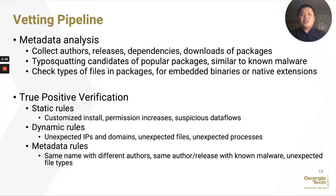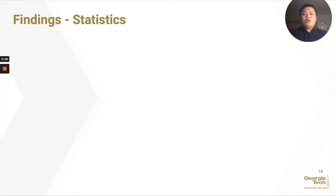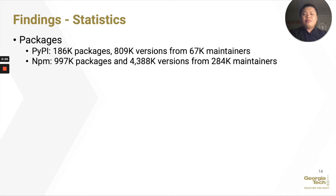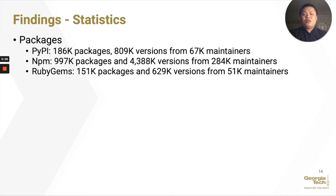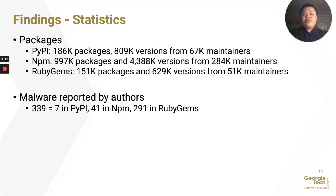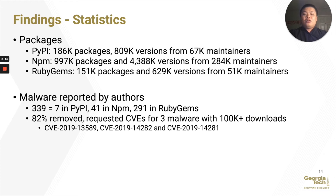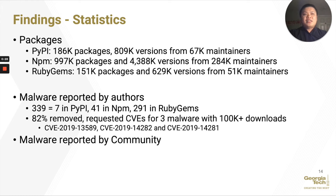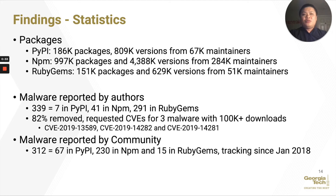Please refer to our paper for a detailed list of the heuristic rules. Using the vetting pipeline, we analyzed packages from PyPI, NPM, and RubyGems, which sums to over a million packages. We identified 339 malware in total, out of which 82% have been removed by registry maintainers, and three have been assigned CVEs. In addition, we have been tracking attacks reported by the community since January 2018 and collected information for community-reported malware, which amounts to 312.